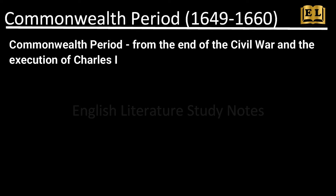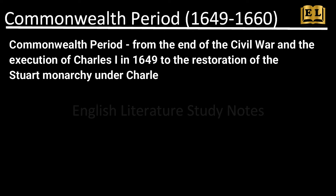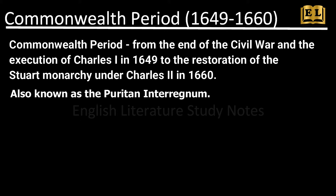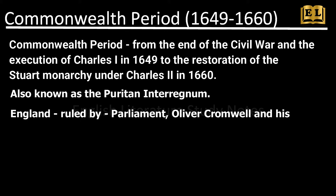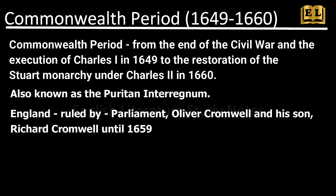Hello all, today we will discuss the Commonwealth period. The Commonwealth period in English history extended from the end of the Civil War and the execution of Charles I in 1649 to the restoration of the Stuart monarchy under Charles II in 1660. The period is also known as the Puritan Interregnum. In this era, England was ruled by Parliament, Oliver Cromwell, and then briefly by his son Richard Cromwell until 1659.